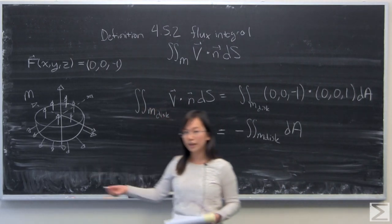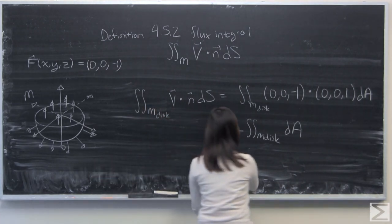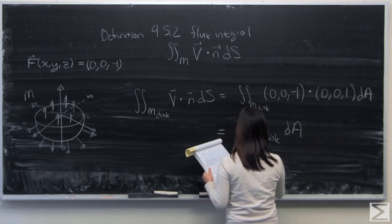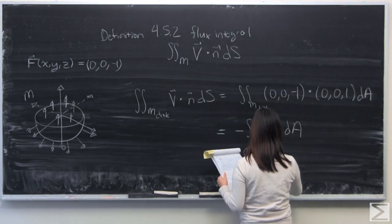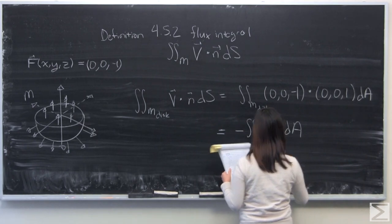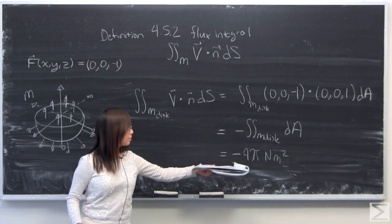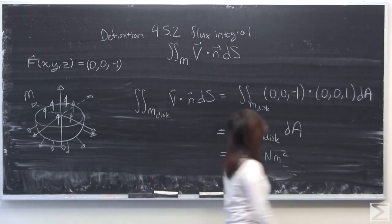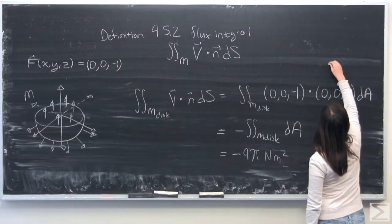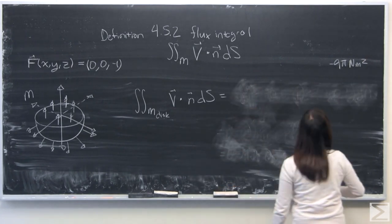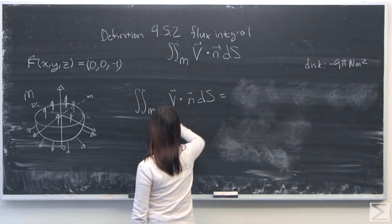And what that's going to give is just a negative times the area of that disk. And of course, it is radius 3. And so that makes it very simply negative 9π, because we all know πr² is the area of a disk. So for that, we have this first piece, we have negative 9π newton meter squared.